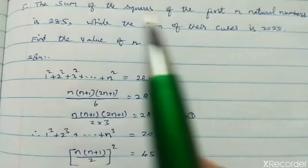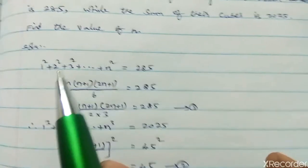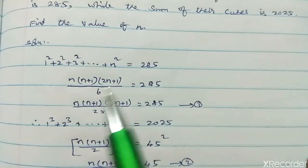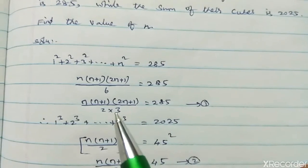Sum of the squares of the n natural numbers is 285. So, squares formula n into n plus 1 into 2n plus 1 divided by 6 equal to 285. Now, 6 is 2 into 3.